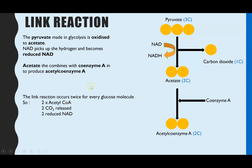Just to summarize, the three things made in this stage are acetyl coenzyme A, carbon dioxide, and reduced NAD. No ATP is made at all. From one round of the link reaction you only get one of each of these molecules, but for one glucose molecule, because you create two pyruvates, the link reaction happens twice. So if asked for the products per glucose molecule, it's two times each of those molecules.